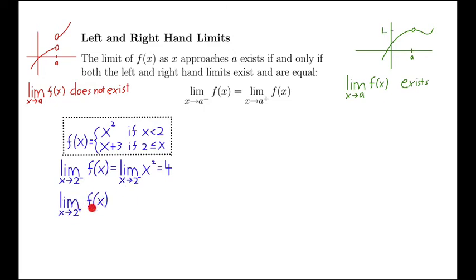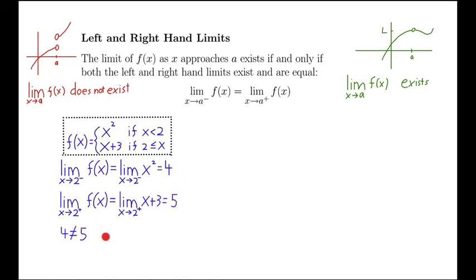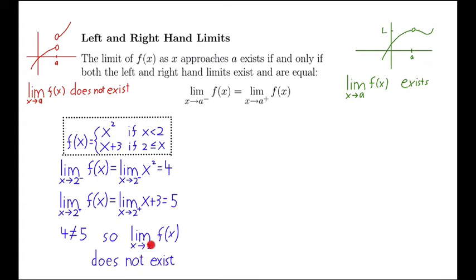Now we take the limit from the right — the plus sign indicates we're coming from the right, meaning x is greater than two. So we use x plus three, and plugging in two gives us five. Notice that four is not equal to five. Since those two are not equal, the limit doesn't exist.